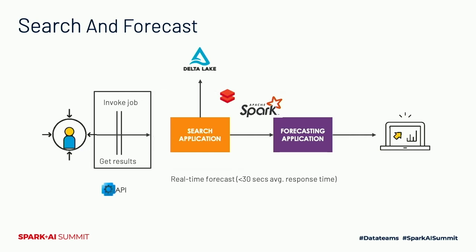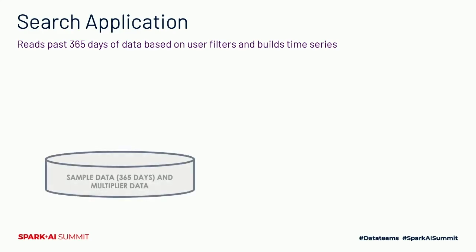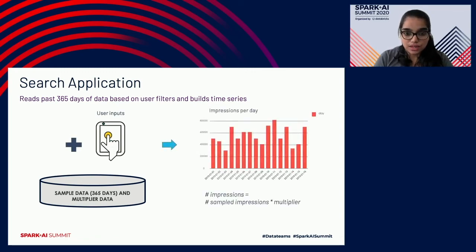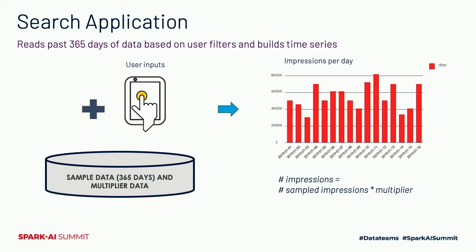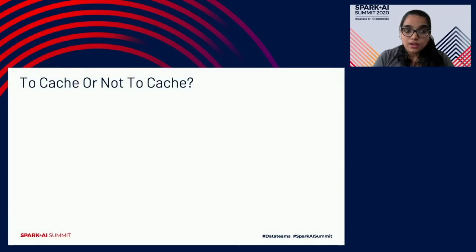Let's zoom into the search application. The goal is to read the past 365 days of sample data along with the multiplier data, filter the sample data based on user inputs, and generate a time series of the form impressions per day — where the number of impressions equals sampled impressions times multiplier. This raises an important question: where does the search application read the data from? Which takes us to data caching — whether we should cache the data and, if so, what technology to use.